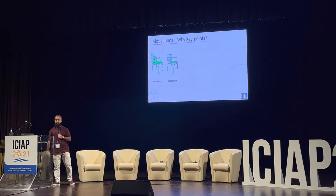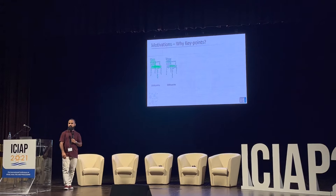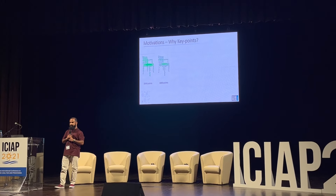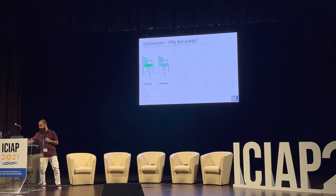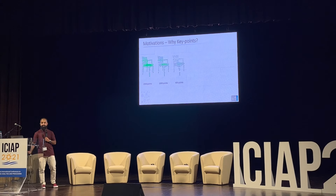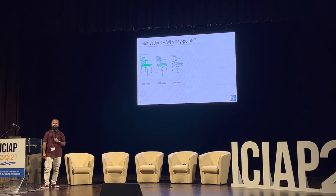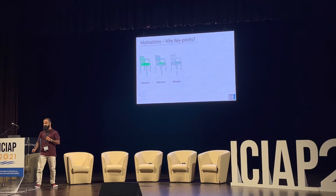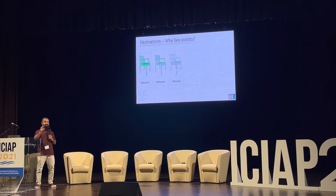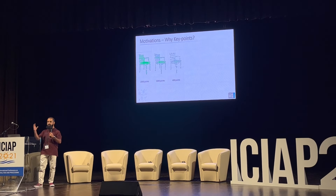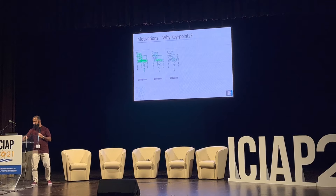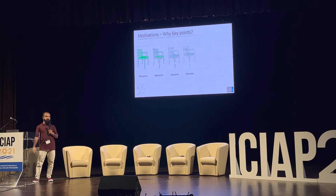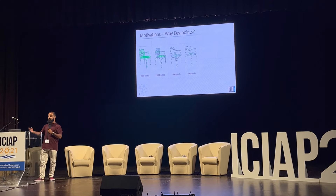Let me reduce the number of points. Can we still recognize this is a chair? Yes — we can still recognize the shape or the structure of the object, even as we reduce further. What about 200 points? We are using only 200 points — we can still identify the object.